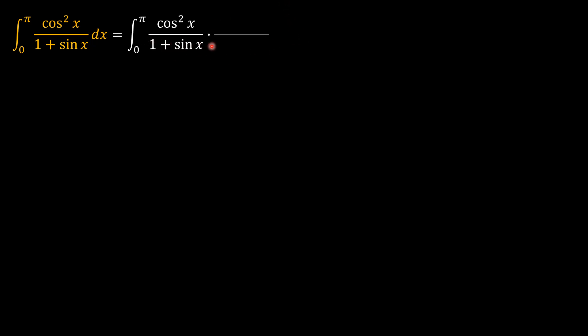So multiplying 1 plus sine x means that we have in the denominator 1 minus sine squared x. In the numerator we have cosine squared x times 1 minus sine x.